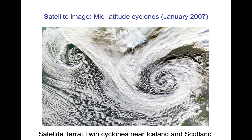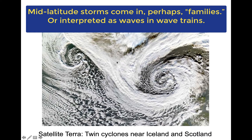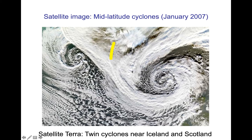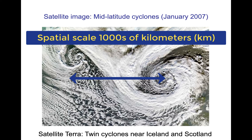Here's another view of a mid-latitude storm — twin storms near Iceland and Scotland. Unlike hurricanes, which are usually isolated events, you might have families of these mid-latitude storms. You can start to see in this figure the idea of a wave of some sort — almost like a breaking wave curling up. That's a descriptively useful analog that also offers potential theoretical ways of looking at these events. The scale of mid-latitude cyclones is quite a bit larger than hurricanes: we're looking at thousands of kilometers.